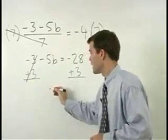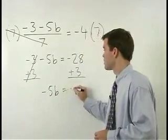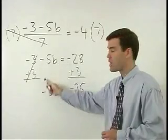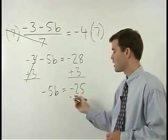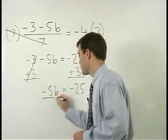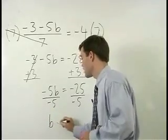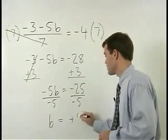We get negative 5B equals negative 25. Don't forget to bring down the negative. To get B by itself, divide both sides by negative 5 and B equals positive 5.